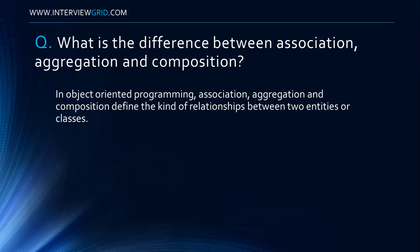What is the difference between association, aggregation and composition? In object-oriented programming, association, aggregation and composition define the kind of relationships between two entities or classes.